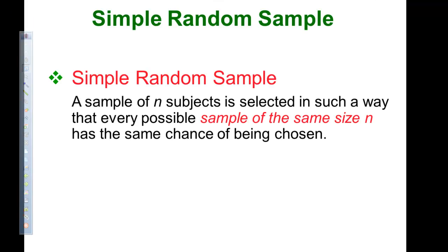Simple random sample. A sample of N subjects is selected in such a way that every possible sample of the same size N has the same chance of being chosen. A simple random sample doesn't have anything to do with just an individual, but every group of a certain size. It has to be such that every group of that size has an equal chance of being chosen.